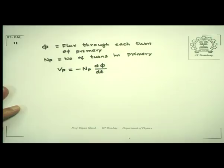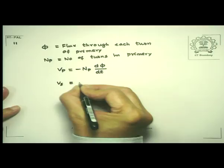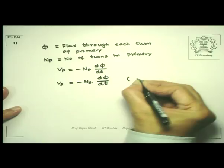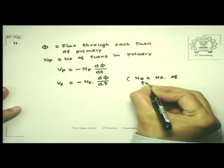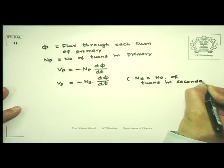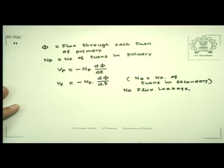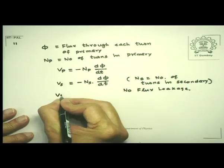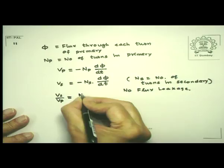Now if I assume that the flux linkage is tight — that there is no leakage of flux, which is again a slightly unphysical assumption — then the same flux is linked with each turn of the secondary circuit. So VS is, if NS is the number of turns in the secondary, it will be minus NS dφ/dt because it is the same flux being linked. Assuming NS is the number of turns in the secondary and no flux leakage, if you compare these two expressions you immediately get the ratio VS/VP = NS/NP.